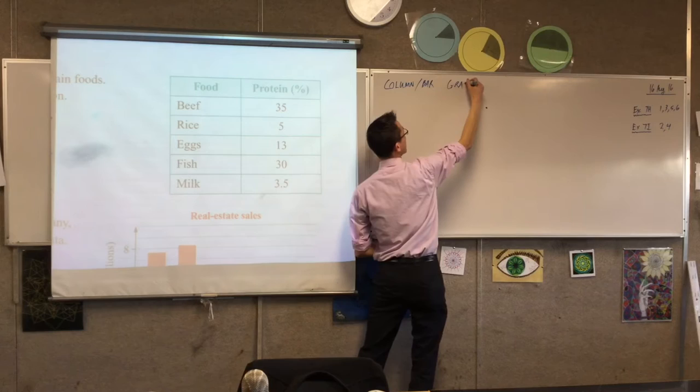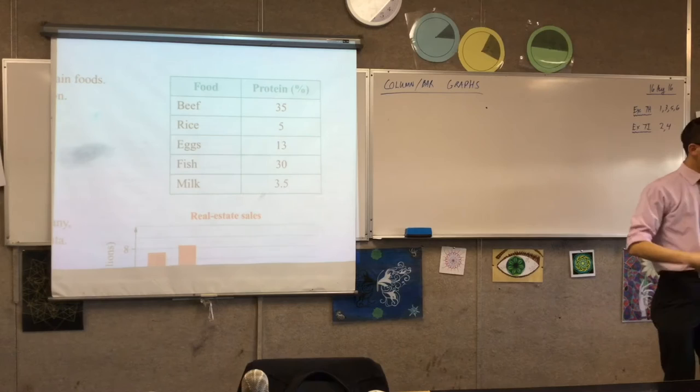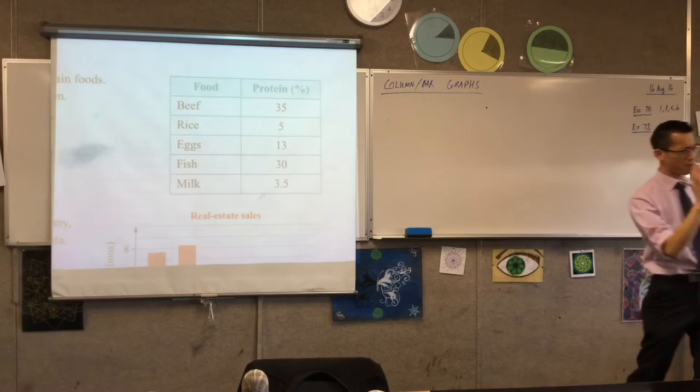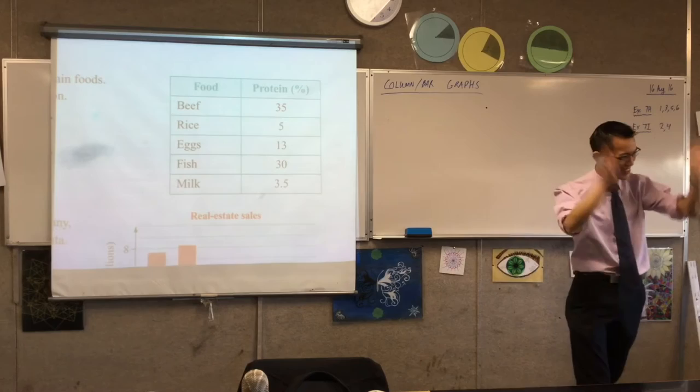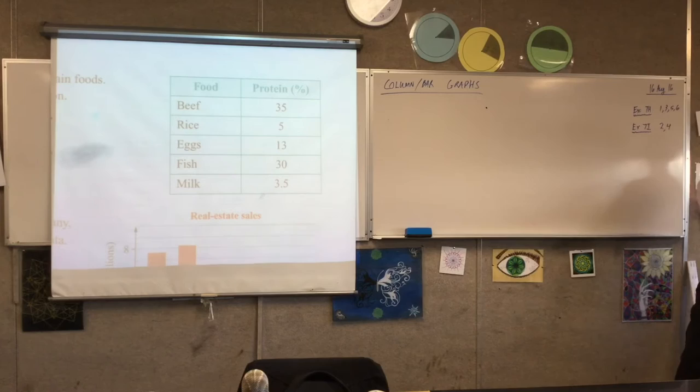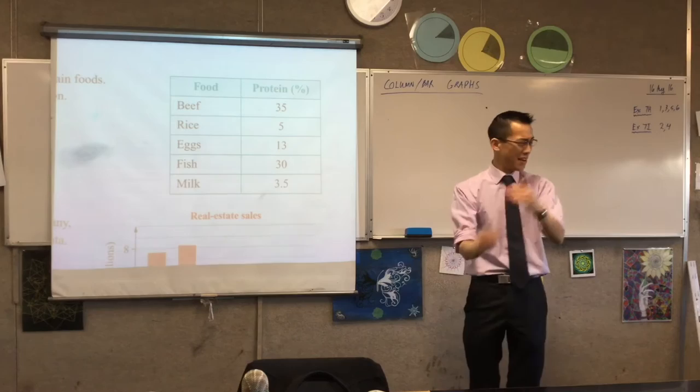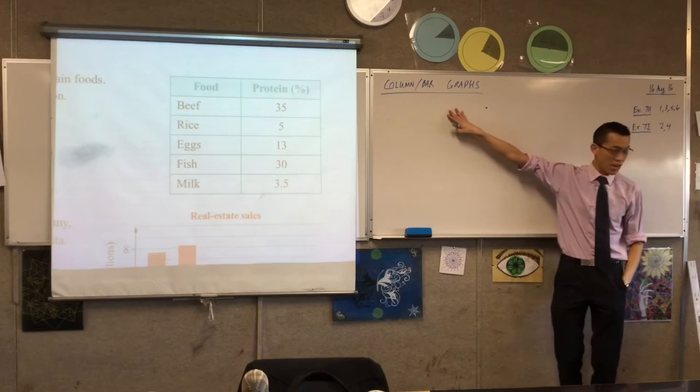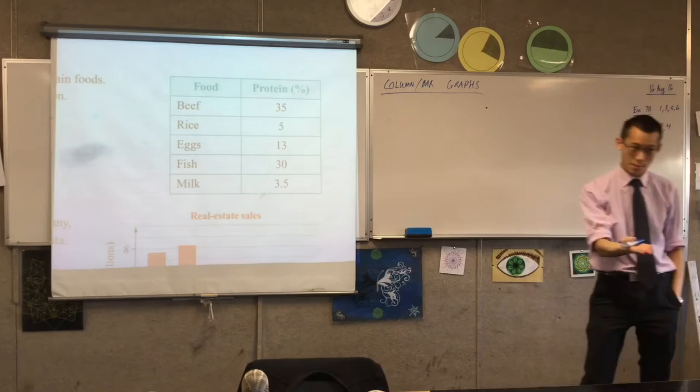We've already learnt lots of different ways of representing what data looks like. Please remember — we're not just showing you lots of these because we can, so you have lots of things to remember. It's because each different way of representing something solves a particular kind of problem. Column and bar graphs are for when you don't want to worry about every single score on your stem-and-leaf plot — you just need to know the overall shape.